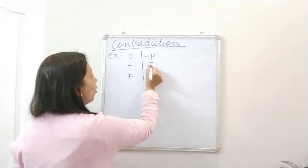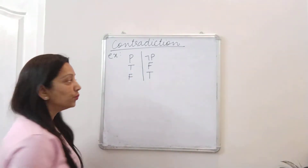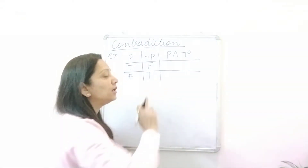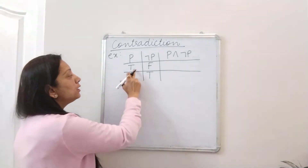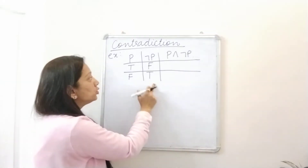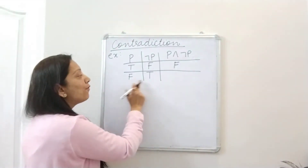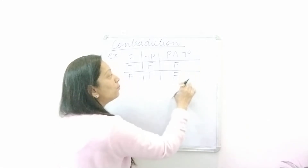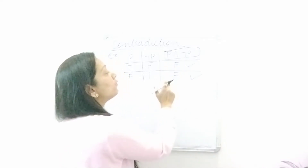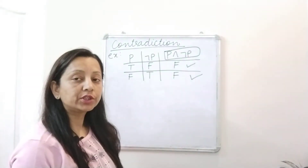Now if I take the compound proposition p and not p, in the case of AND both truth values of the input variables must be true for the result to be true, otherwise it will be false. Here both truth values are never both true — when one is true the other is false, and when one is false the other is true. So true AND false gives false, and false AND true gives false. For all results in the truth table, the compound proposition p and not p is false.